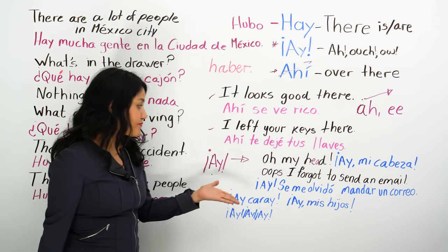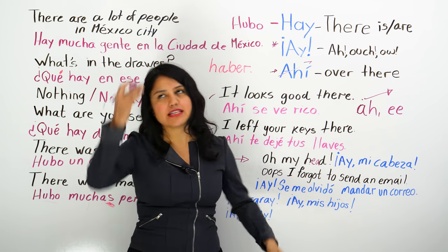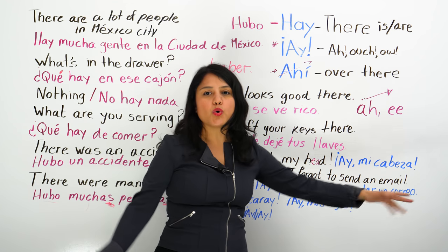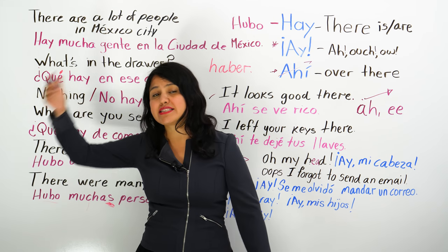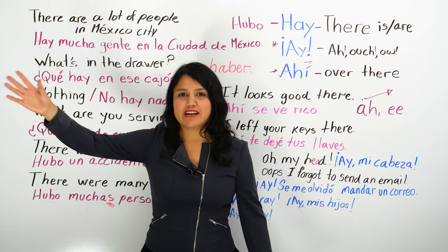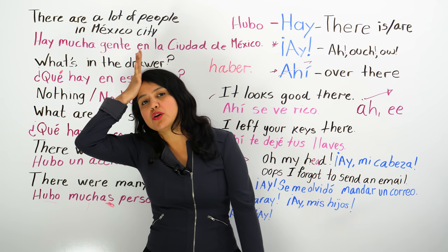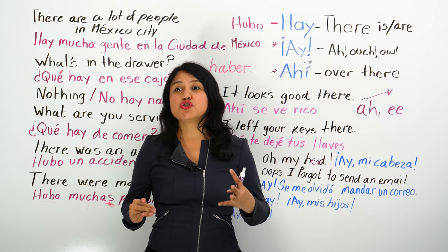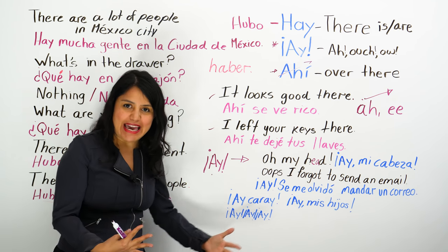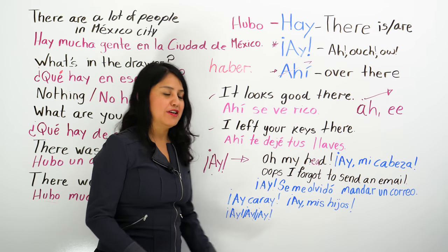You also use 'ay' to complain — like 'oops, I forgot to send an email': ¡ay, se me olvidó mandar el correo! Or ¡ay, se me olvidó llamarle a fulanito! — 'fulanito' is a placeholder name, like 'so-and-so.' ¡Ay, se me olvidó hablarle a fulano! So 'ay' is very useful to express drama, pain, and complaints.